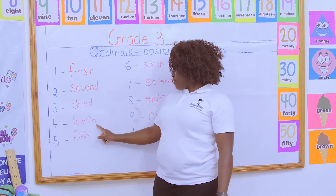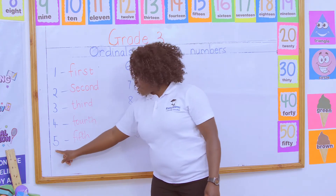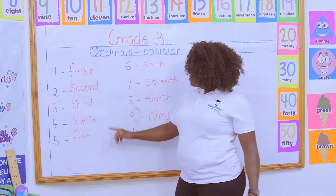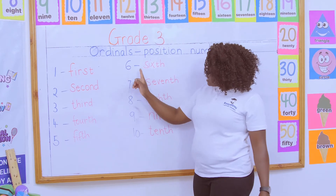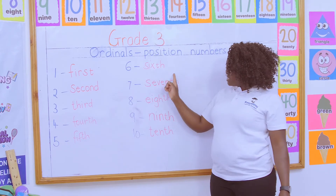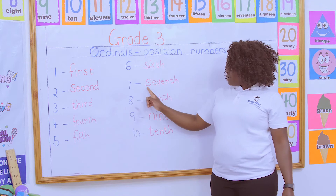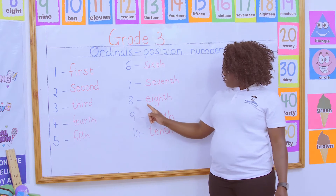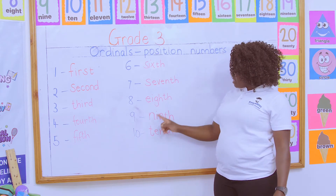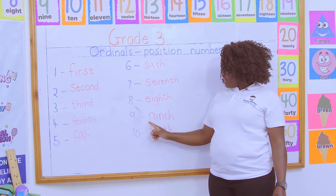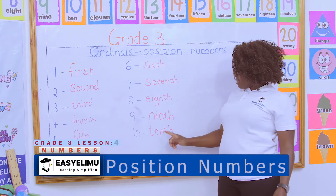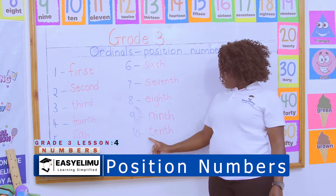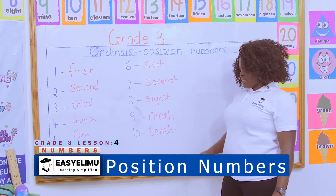Four — fourth. Five — fifth. Six — sixth. Seven — seventh. Eight — eighth. Nine — ninth. Ten — tenth.